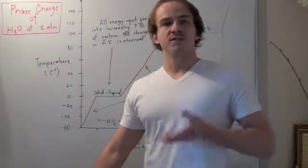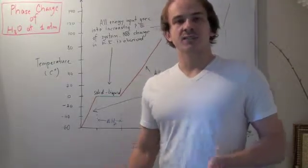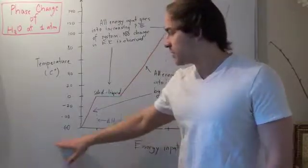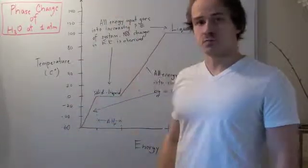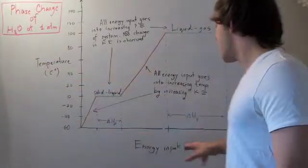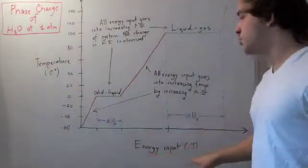In this lecture, we're going to look at the phase change of water at constant pressure at 1 atm when it goes from a very low temperature to a very high temperature. The y-axis is temperature in Celsius. The x-axis is energy input in joules.